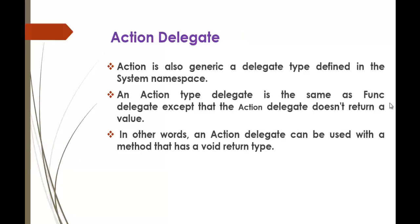Right now we will understand what Action Delegate is. In the previous session we learnt the FUNC Delegate. Keep in mind, FUNC and Action are both generic type delegates defined in the System namespace. Action Delegate is the same as the FUNC Delegate, except that Action Delegate does not return a value. An Action Delegate can be used with a method that has a void return type.